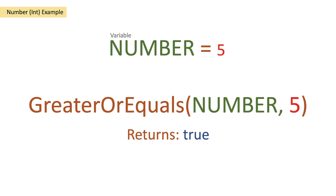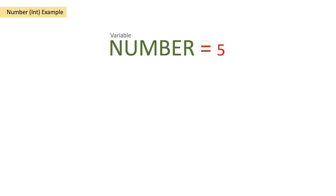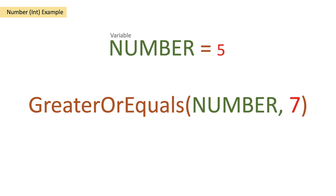So what happens if 5 is not greater than or equal to the number that we are passing in? We've still got our variable, we pass that variable into our function of greater or equals, but this time we're passing in the number of 7. So is 5 greater than or equal to 7? Both answers for that are false. It is not greater than 7 and it's not equal to 7, so then we return a false.